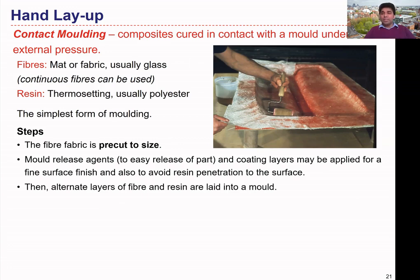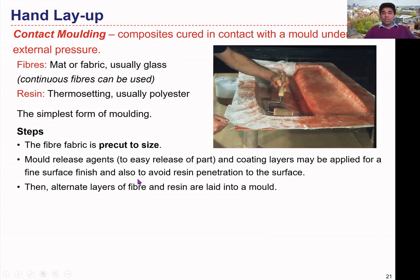We start by preparing the mold to the required shape, then pre-cutting the fabric to the desired size before laying it up. Since the structure can stick firmly to the mold, we apply mold release agents to ease removal of the component after curing. We can also apply coating layers to achieve a good surface finish and to avoid resin penetration into the product surface, depending on the nature of the resin and reinforcement.